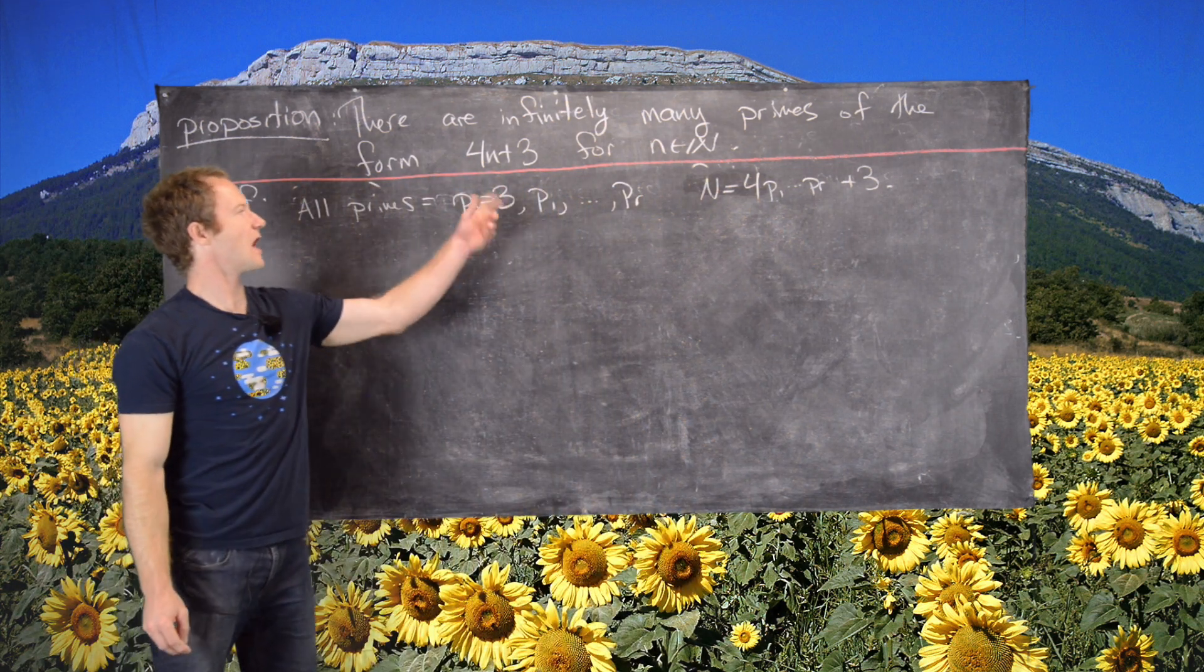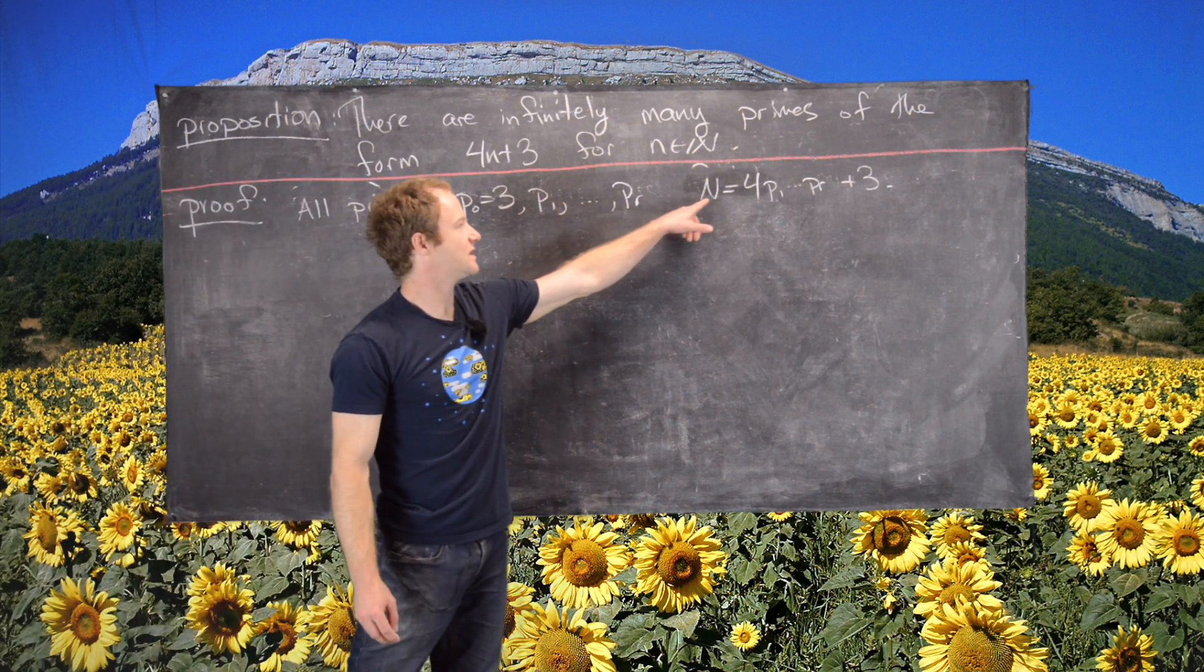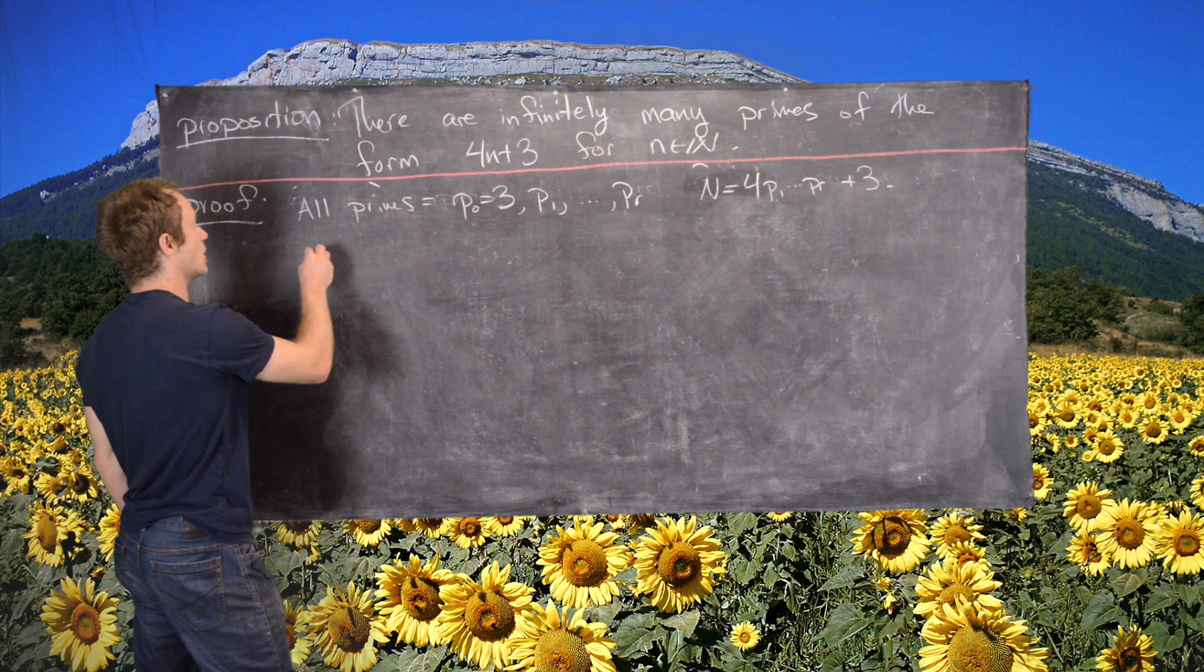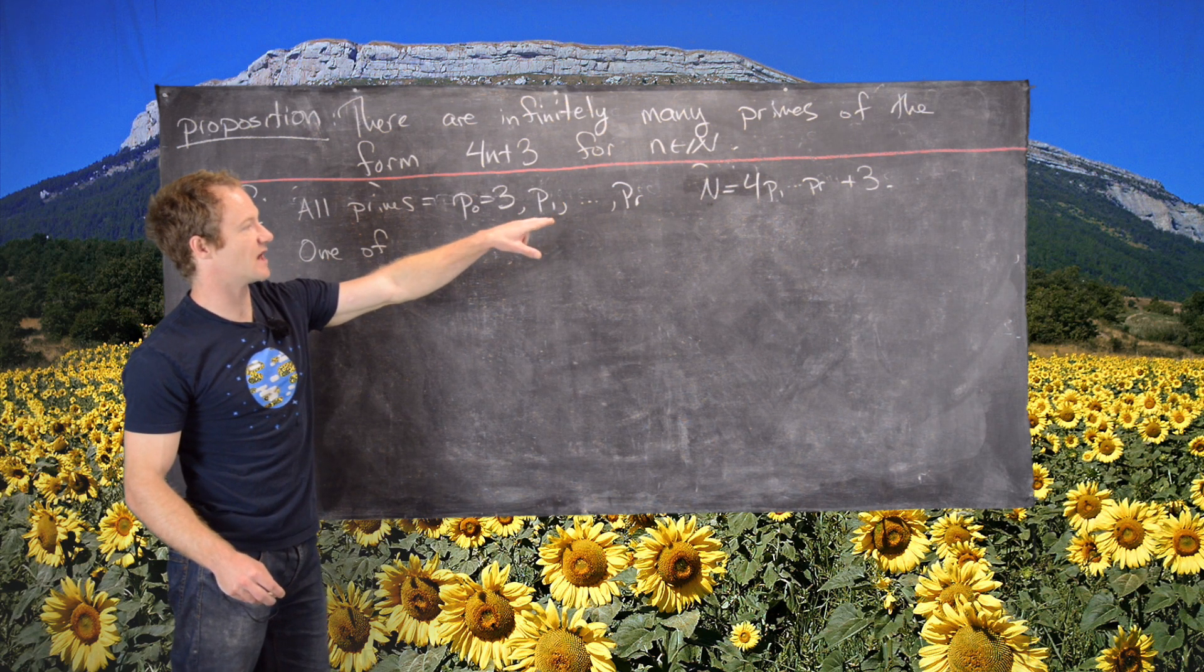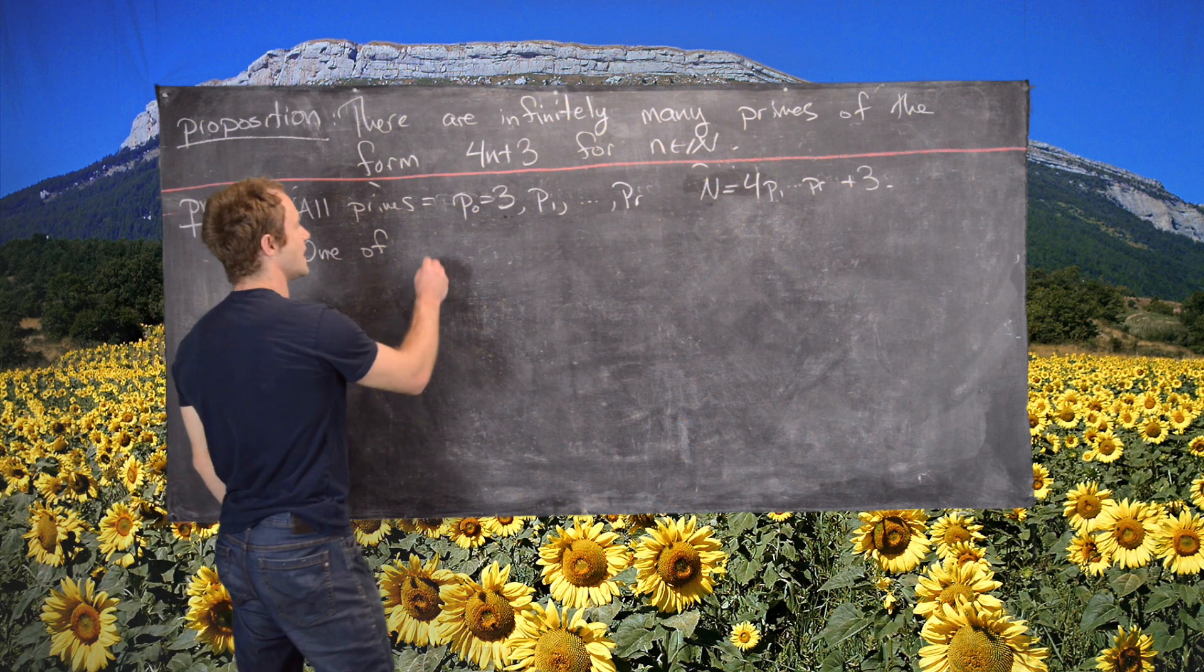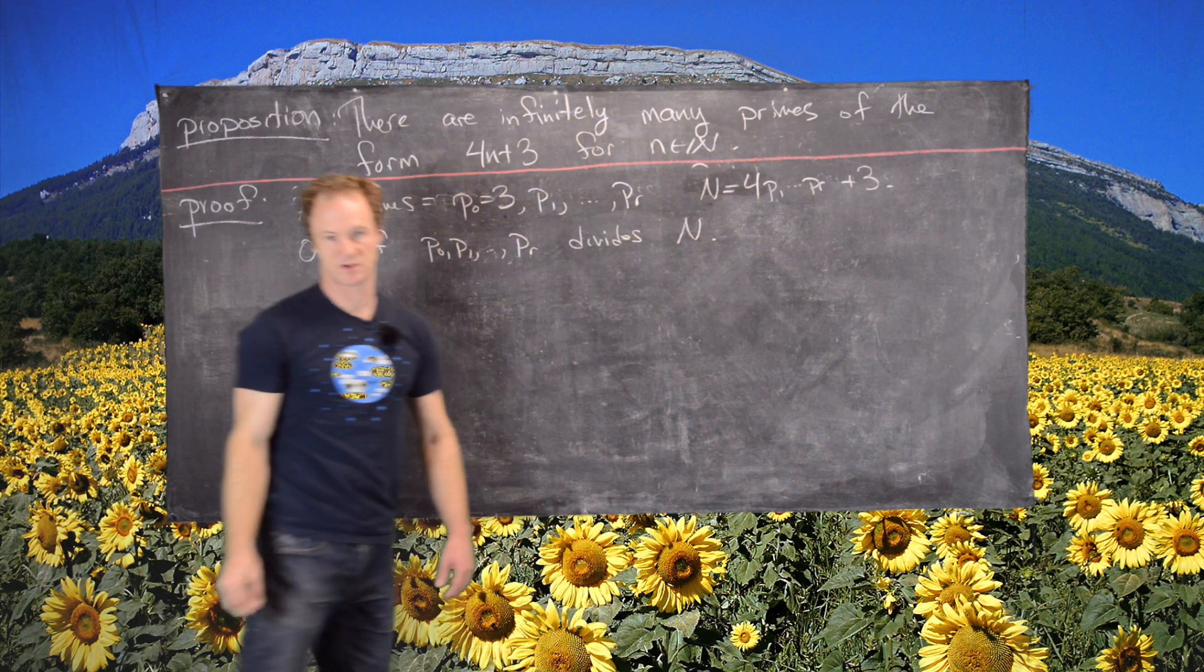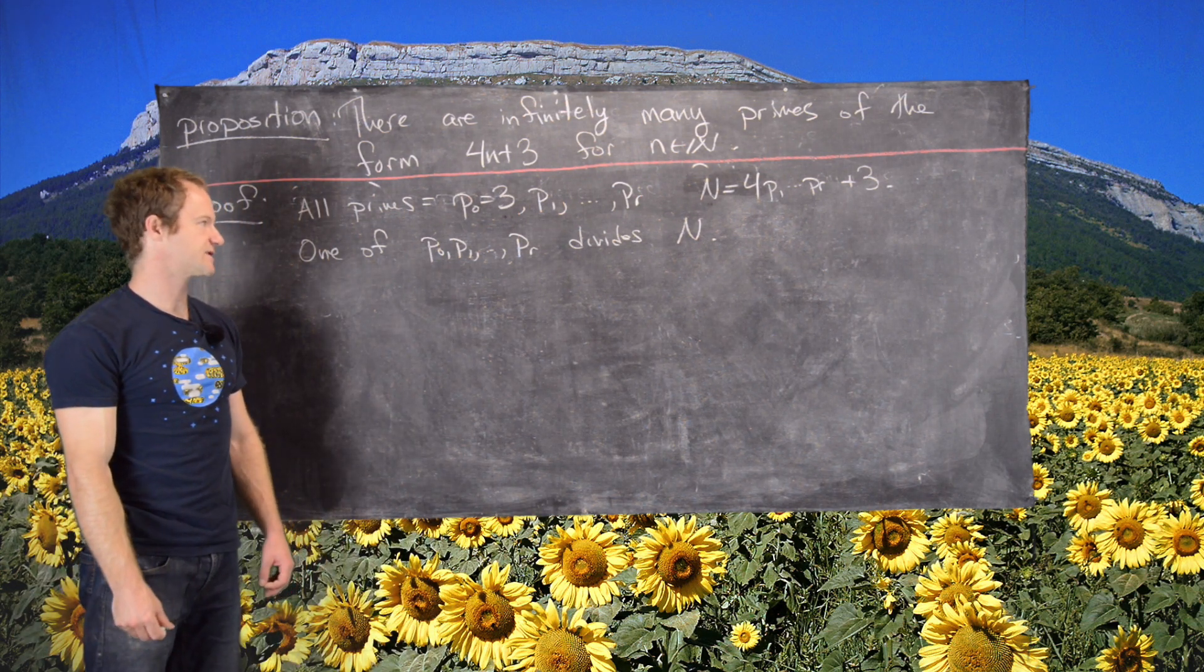All primes of the form 4n plus 3 were on this list, and then we also showed that there is a prime in the factorization of n which is of this type. So one of the primes in the factorization of n is of the type 4n plus 3. In other words, it's one of these. So one of P0, P1 up to PR divides n.